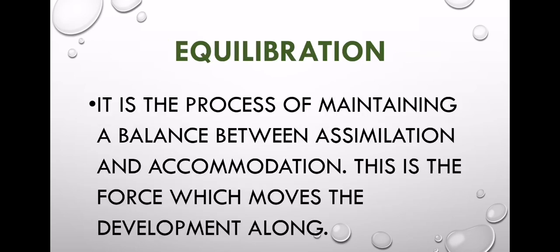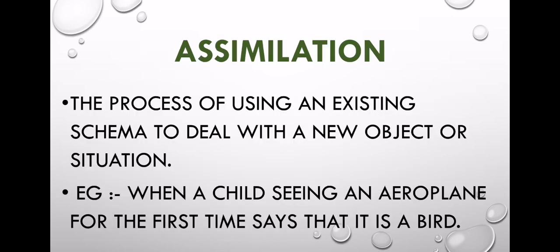Then, what is Equilibration? There is a system of existing knowledge and existing schema, such as the aeroplane and bird example. Then there is disequilibrium and confusion.